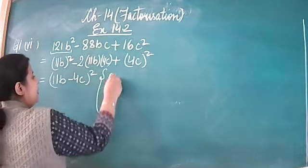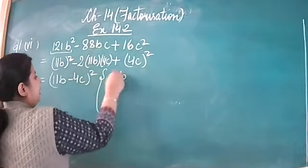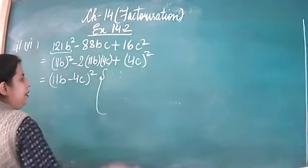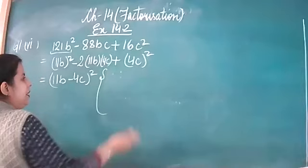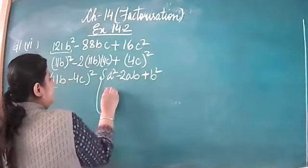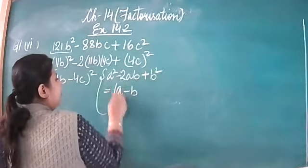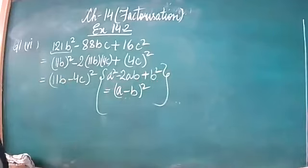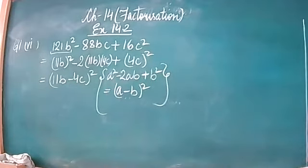The identity used here is (a minus b) whole square, which equals a squared minus 2ab plus b squared. This is a very simple question — we have done this type of question before, so it is not much difficult.